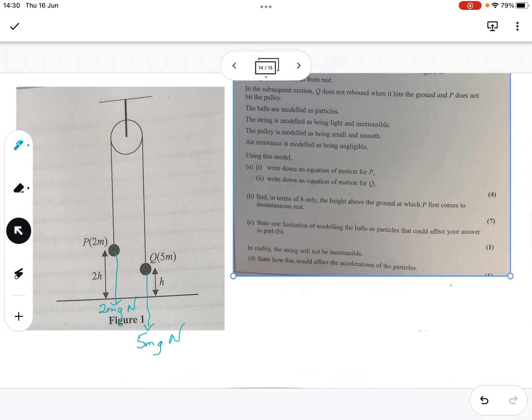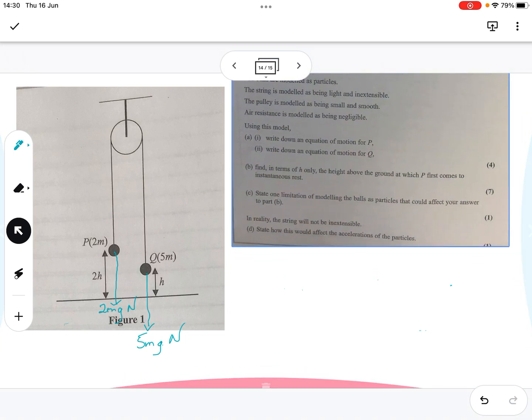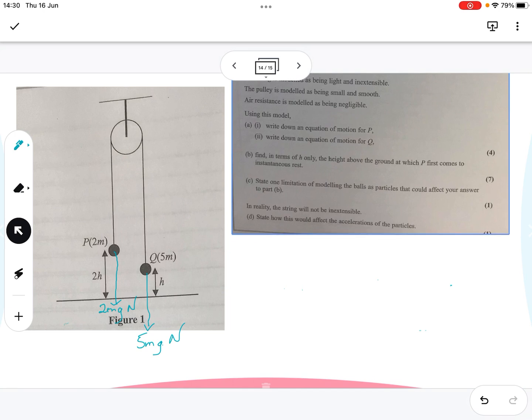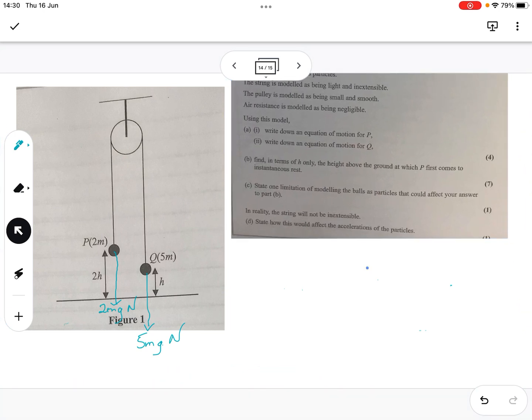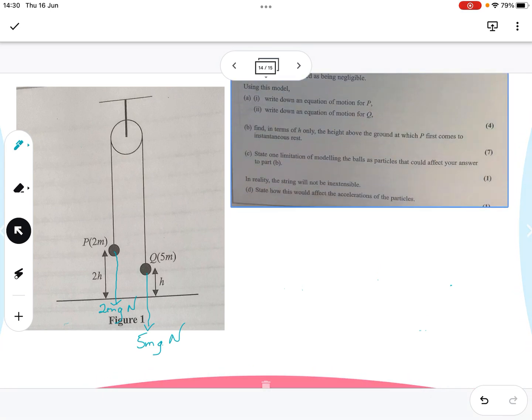Let's move it up a bit. In subsequent motion, Q does not rebound when it hits the ground, which is good, which means it doesn't jolt or anything. And P does not hit the pulley, which means it doesn't stop the other thing from moving. The balls are modelled as particles. The string is modelled as light and inextensible. The pulley is modelled as being small and smooth. Good, so I was worried about that. Air resistance is modelled as being negligible.